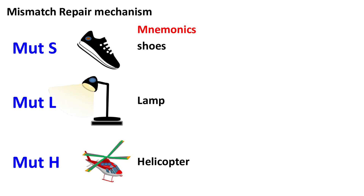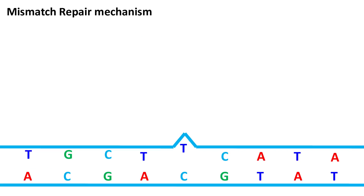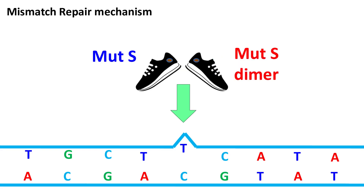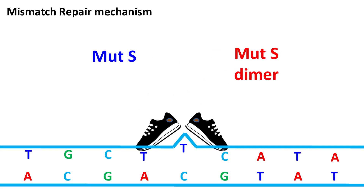The protein that recognizes mismatch nucleotides in the DNA is MUT-S. MUT-S is also known as the mismatch recognition protein. The MUT-S protein functions as a dimer and identifies the mismatch in the DNA.